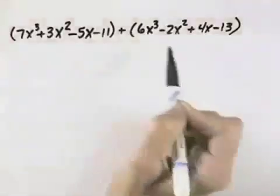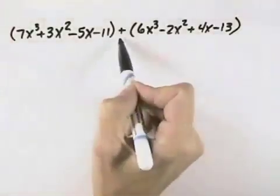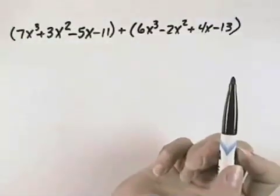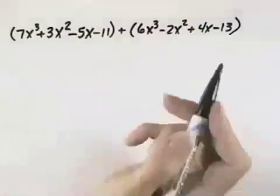Here we want to add these two polynomials. In this case, it's just a plus sign with nothing in front of either of the polynomials, so we do not need to use the distributive property. We can just drop our parentheses.